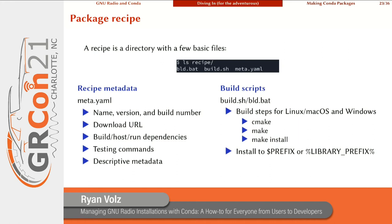The recipe has the download URL, a list of dependencies for the build, host, and run environments, some testing commands to make sure the package works correctly, and some descriptive metadata. The build scripts for Linux and macOS are `build.sh` shell scripts, or for Windows it's a `build.bat` script. These lay out the build steps — your typical sequence of CMake, then make, and make install — and they install to the prefix or library prefix directory as appropriate for Unix or Windows.